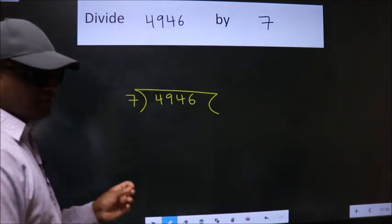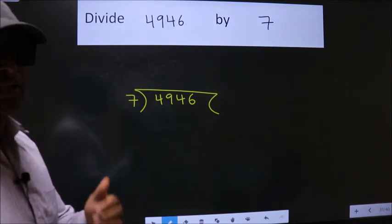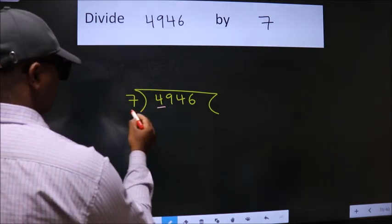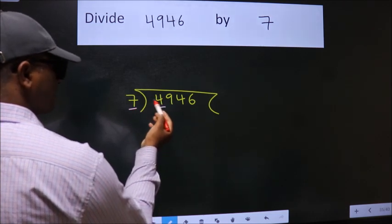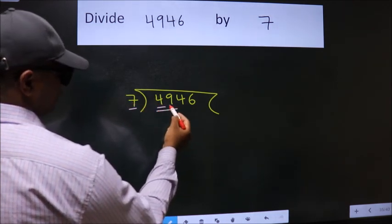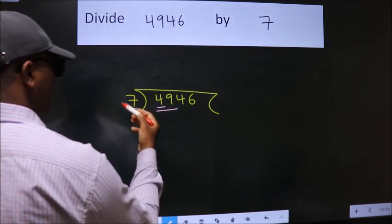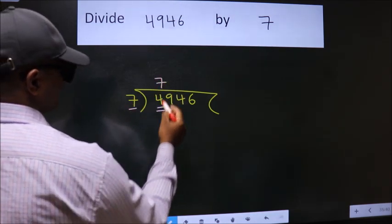This is your step 1. Next, here we have 4. Here 7. 4 is smaller than 7, so we should take two numbers: 49. When do we get 49 in the 7 table? 7 times 7 is 49.